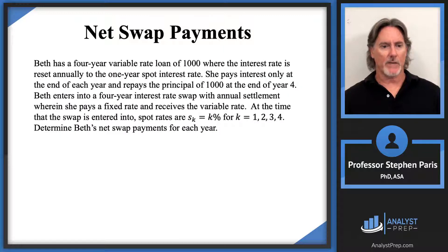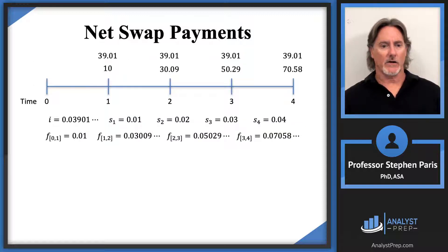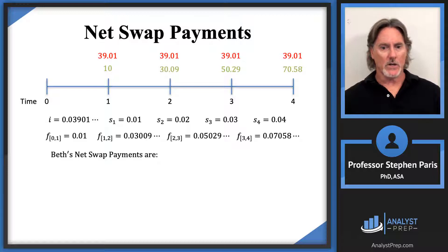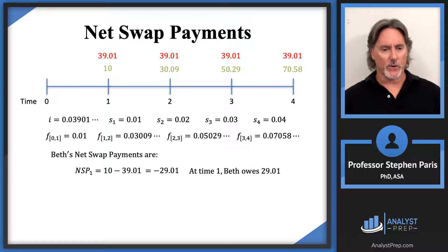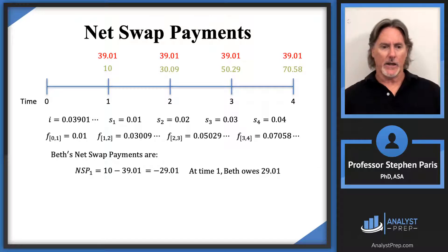Going back to the problem, Beth is paying the fixed rate and receiving the variable rate. We're looking to determine Beth's net swap payments for each year. She pays $39.01 each year and receives the non-level payments. At time one, she's going to be getting $10 and paying $39.01, so the net swap payment at time one is negative $29.01. This means Beth owes $29.01 at time one — we just do this net calculation rather than making both parties exchange separately. At time two, Beth receives $30.09 and pays $39.01, so the net is negative $8.92 — Beth owes $8.92 at time two.